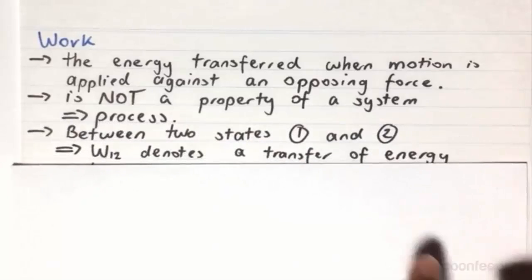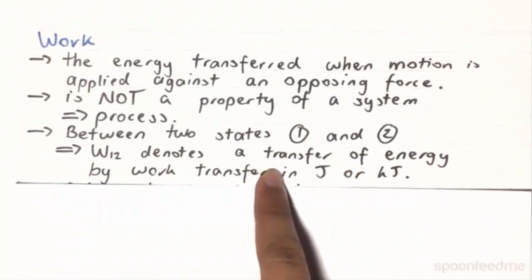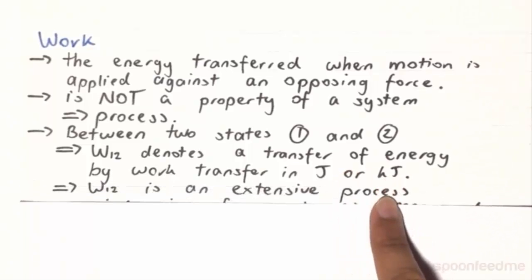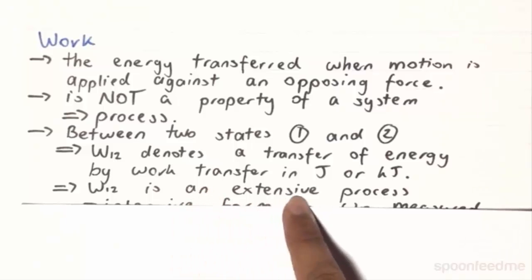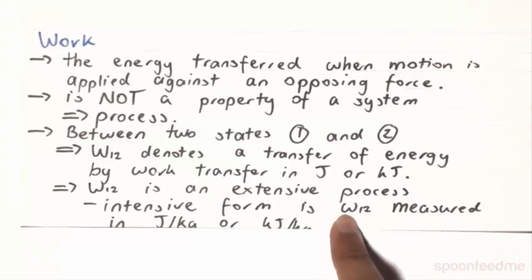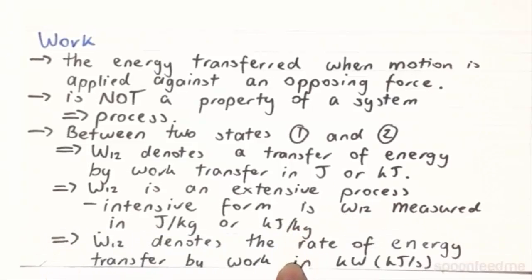So between states 1 and 2, capital W12 denotes a transfer of energy by work transfer in joules, or more commonly will be in kilojoules. Work 1, 2, just like Q 1, 2, is going to be an extensive process. And so the intensive form is a lower case w12, and that's going to be measured in joules per kilogram, or kilojoules per kilogram.